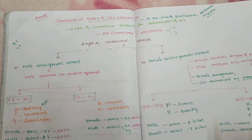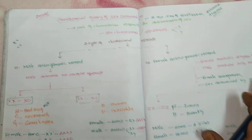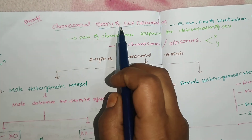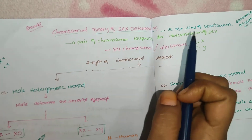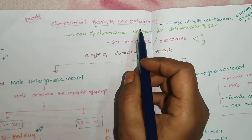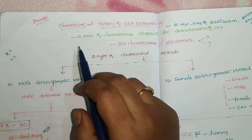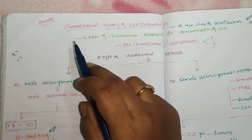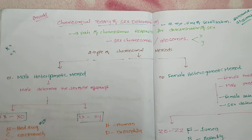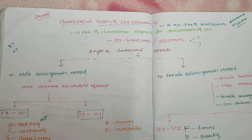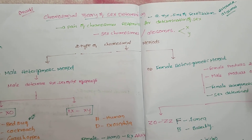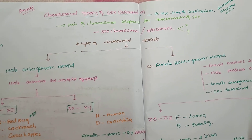Hello everyone, today I am going to explain the chromosomal theory of sex determination. It is secondary zoology genetics unit. It is one of the most important long answer questions in the IPE. The question is: Describe the chromosomal theory of sex determination.